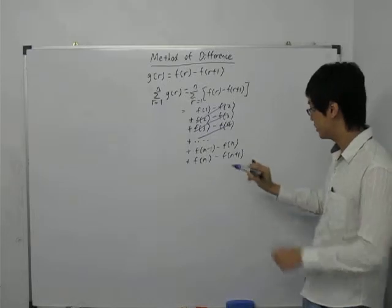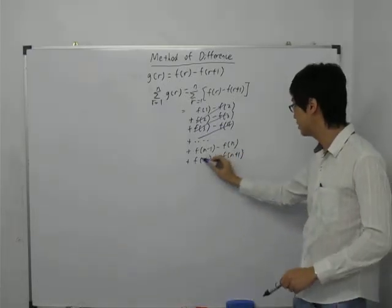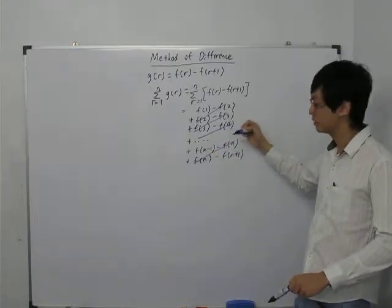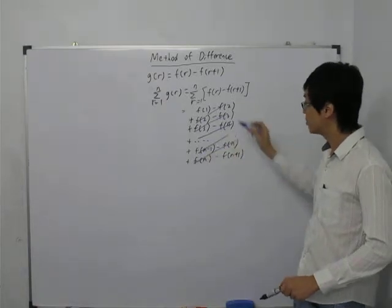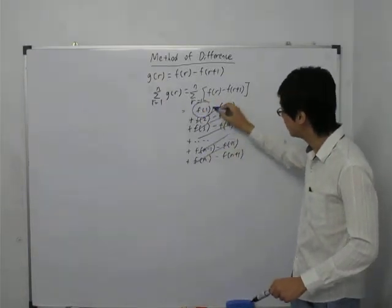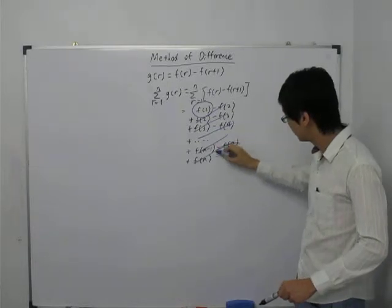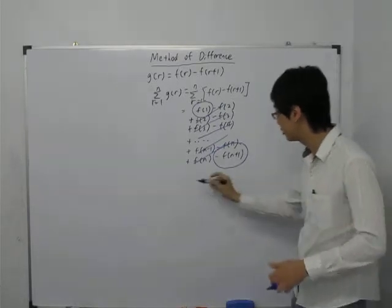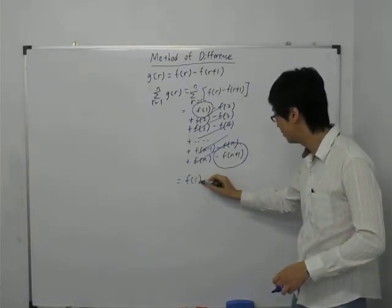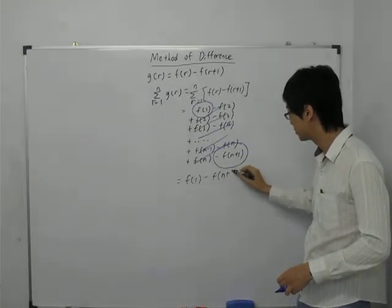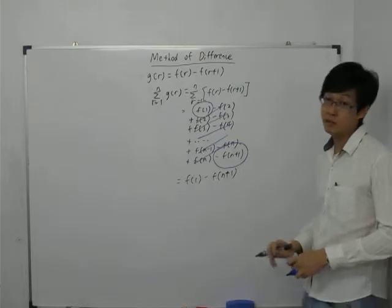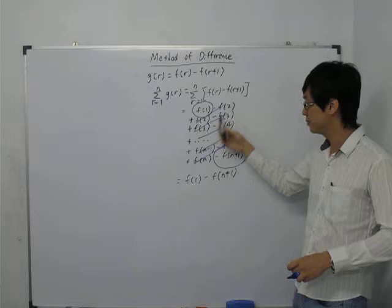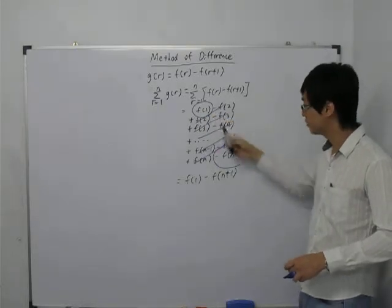And so you can see that, what can you see? You can see that this term cancels with this term. And of course this term cancels with the row above, which I didn't write. This term cancels with the row above. And so I'll be left with how many terms? I'll be left with this one and this one. I'll be left with two terms. And so my answer is simply just equals to f(1) minus f(n+1). So, this is how we apply method of difference, by cancelling out all the terms in the centre. I'll be left with the first few terms and the last few terms.